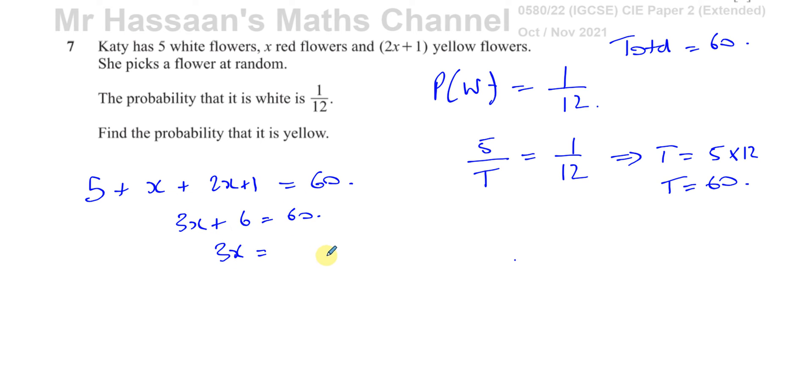So 3x equals 60 minus 6, which is 54. Divide both sides by 3, you get 18. So there's 18 red flowers.